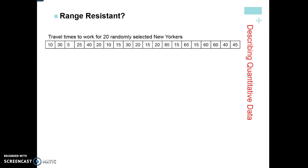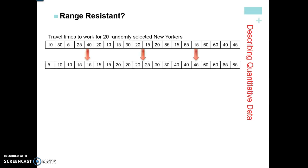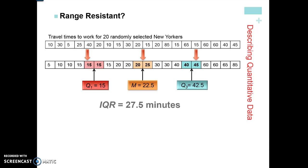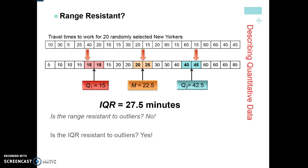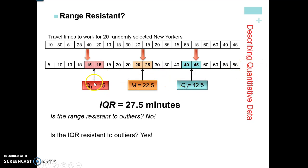Is the range resistant to outliers? Absolutely not. Here our IQR was 27.5. If we had a data point like 1,000, the range from 5 to 1,000 is huge — the range is not resistant to outliers and changes with very large numbers. However, the IQR is resistant to outliers — adding 1,000 to the dataset won't change the IQR value at all. So don't ever use the range to describe your spread; always use the IQR.